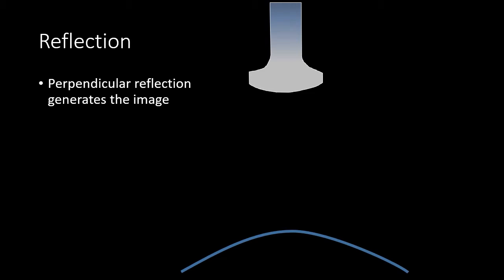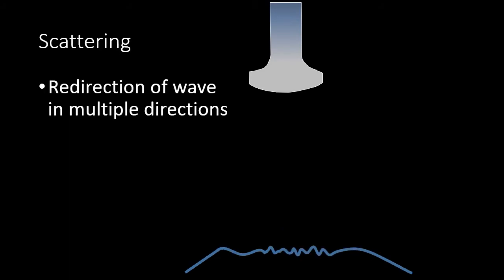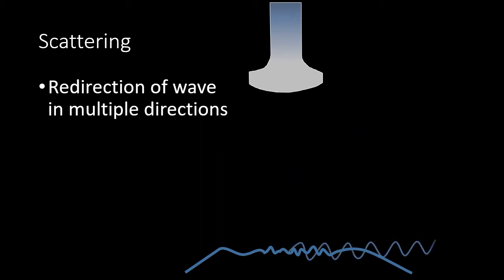With a smooth surface oriented perpendicular to the sound waves just under our probe, when the sound wave comes down and hits that smooth surface, we get a nice strong reflection back to our probe to generate our image. With scattering, best demonstrated on an irregular surface, instead of reflecting back to the probe, the waves get redirected away from the probe. Since those sound waves do not return to the probe, they cannot contribute to image generation and result in loss of signal.